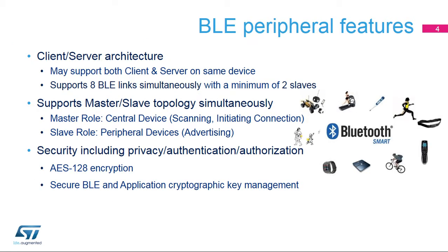The STM32WB supports the main Bluetooth smart features. A BLE device is either a master or a slave device for one link. The STM32WB supports eight BLE links simultaneously with a minimum of two slaves. The terms master and slave are the link layer roles equivalent to central and peripheral.